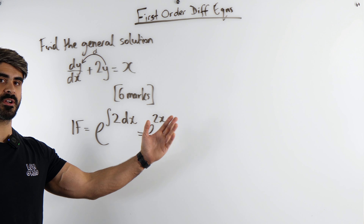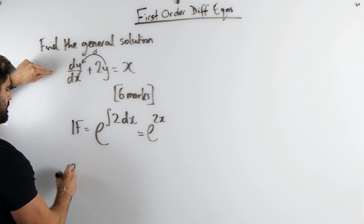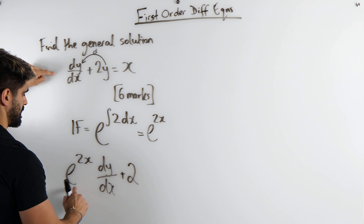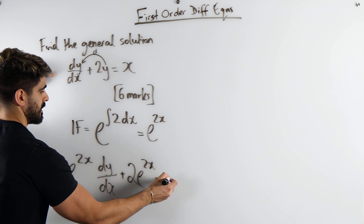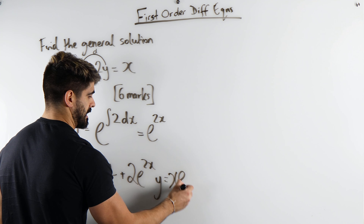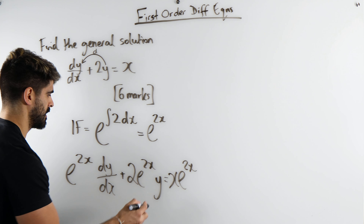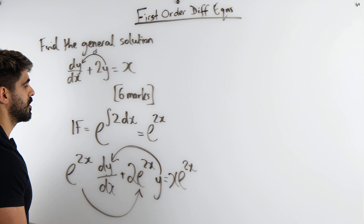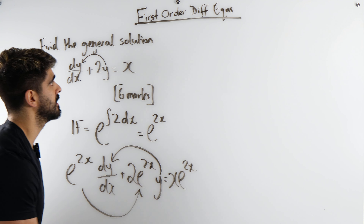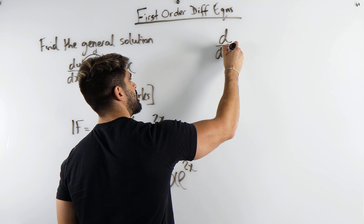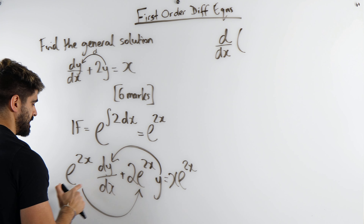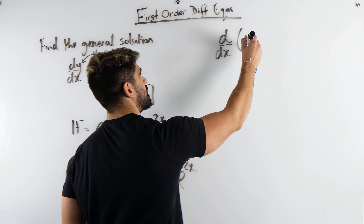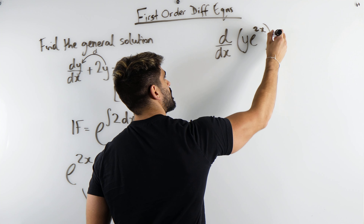Now with this integrating factor we multiply the whole equation by the integrating factor. So we get e to the 2x dy by dx plus 2e to the 2x times y equals x. Does it work? y differentiates to this and this now differentiates to this. So we're trying to figure out what our fg is. What we're saying is that the differential with respect to x of y·e to the 2x — you always look at what is differentiating to what.